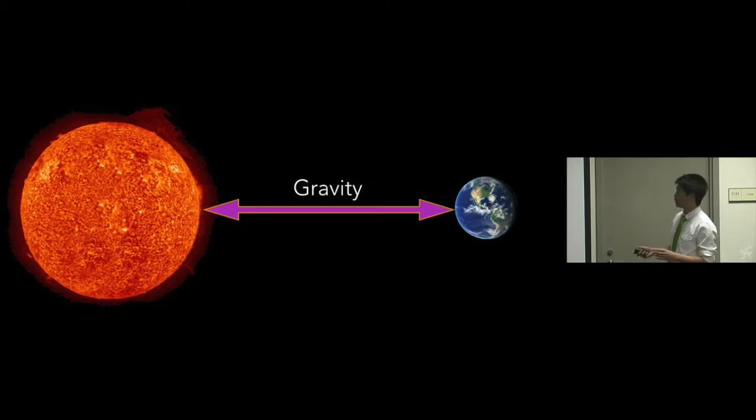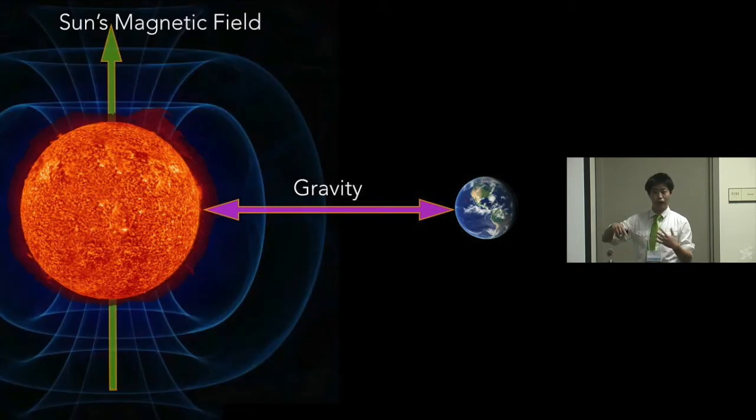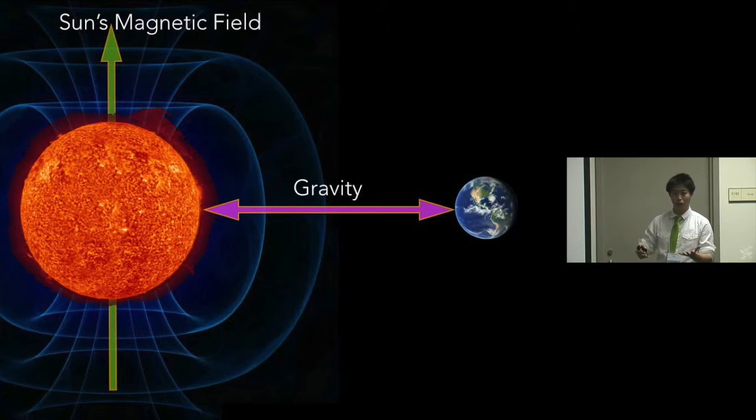Gravity is the overwhelming force that holds Earth to the sun. However, there are other forces. Whenever you have a moving charged particle, you create a magnetic field. So the sun is a swirling ball of hot hydrogen, which creates the sun's magnetic field. And the Earth is a rotating ball of molten magma, molten core underneath us. That creates our Earth's magnetic field.